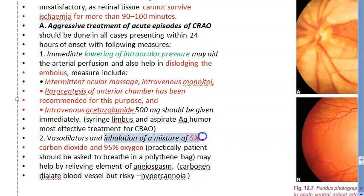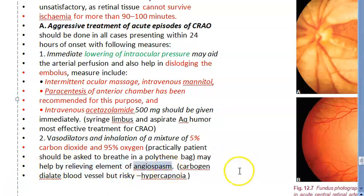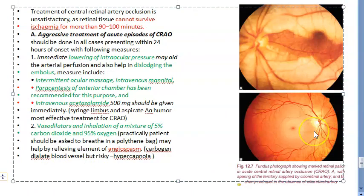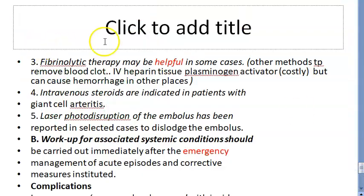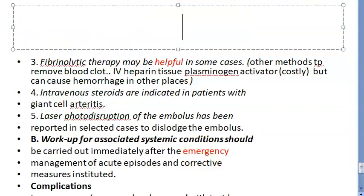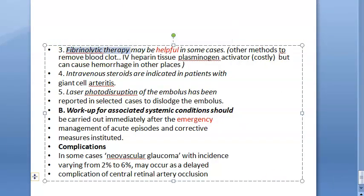Vasodilators and inhalation of a mixture of five percent carbon dioxide and 95 percent oxygen are used to improve blood supply — this is especially helpful if the cause is angiospasm. Intravenous acetazolamide, a carbonic anhydrase inhibitor, further lowers intraocular pressure. Fibrinolytic therapy and intravenous steroids — particularly if giant cell arteritis is suspected — are additional treatment options.